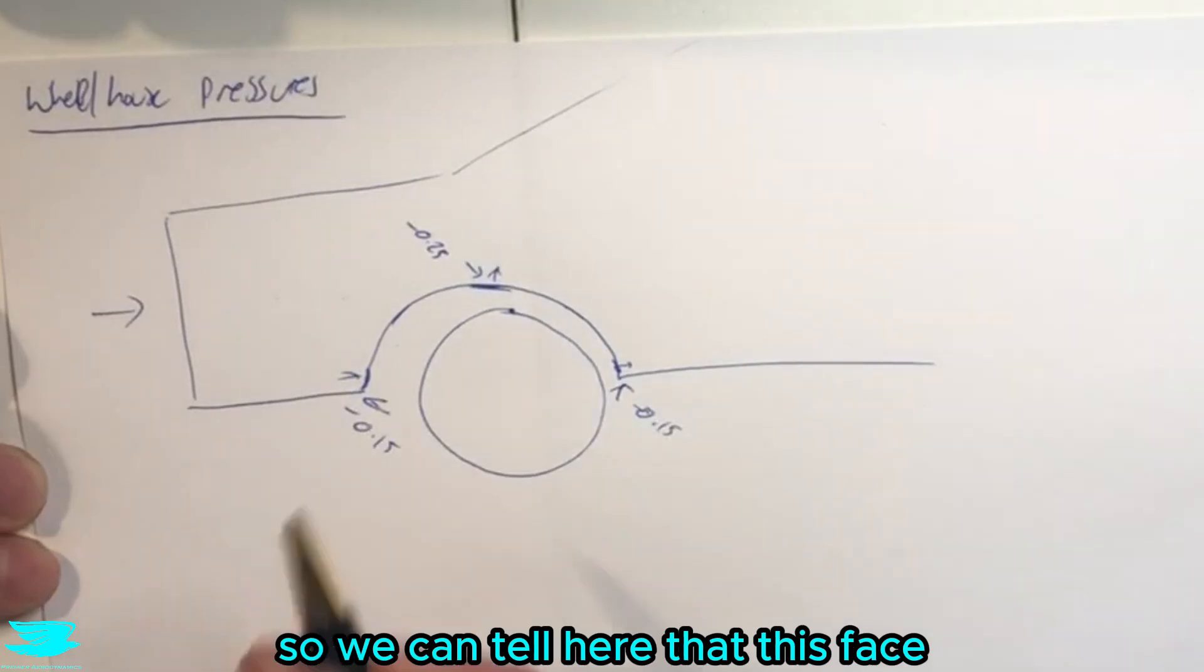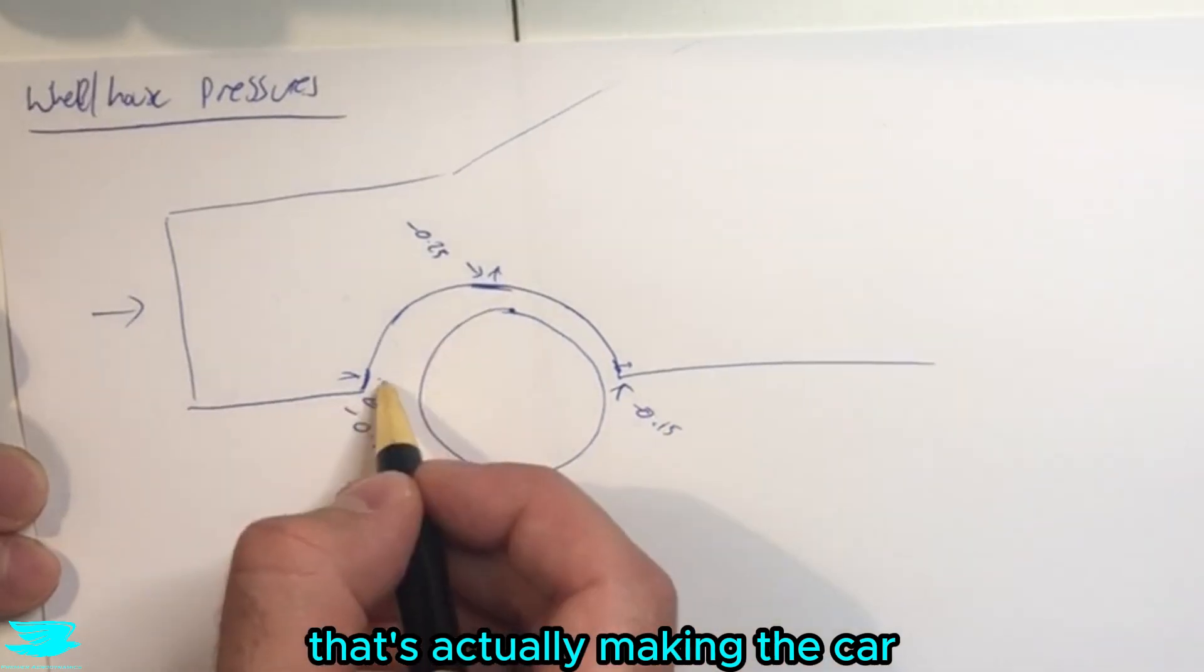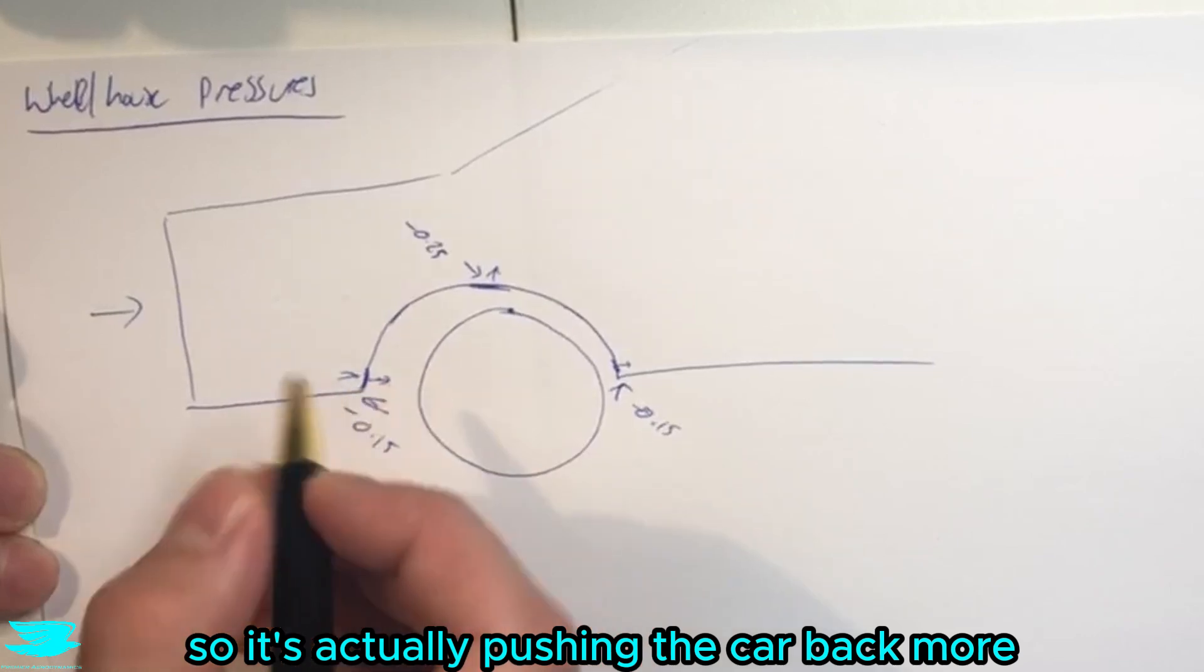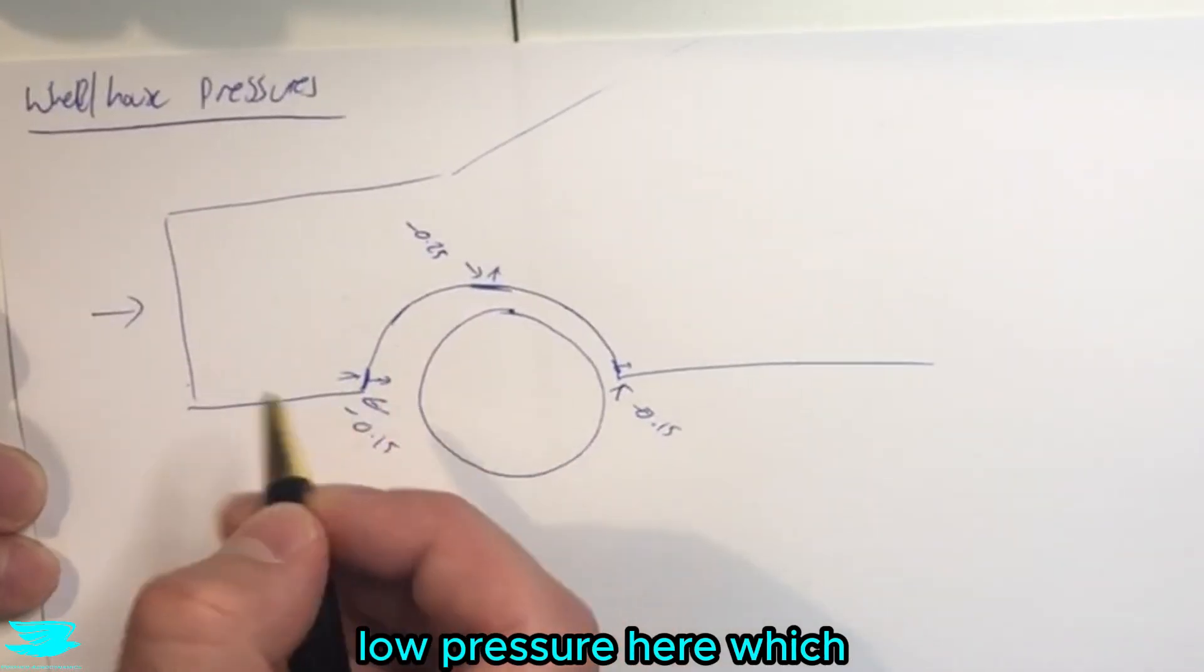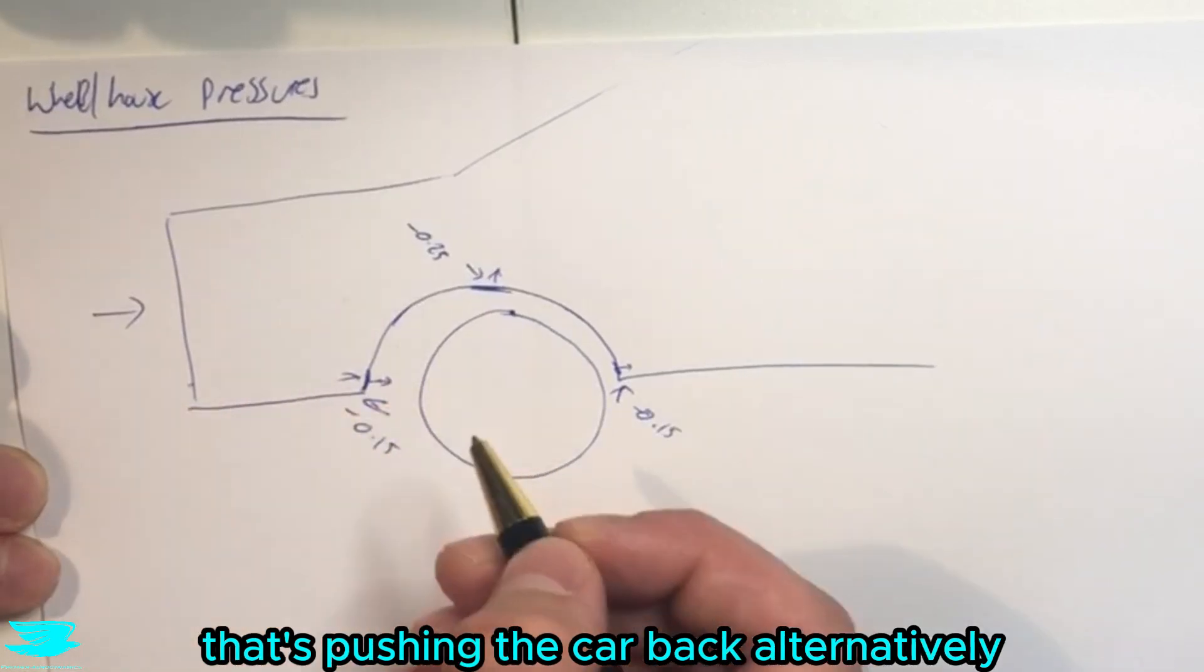So we can tell here that this face, because there is negative pressure here, that's actually making the car more draggy. So it's actually pushing the car back more, because if we have high pressure here, low pressure here, which we do have high pressure here because the flow is coming in stagnating, that's pushing the car back.